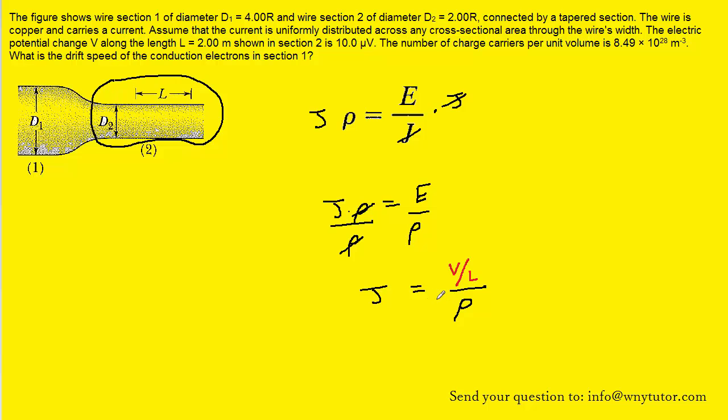This is going to allow us now to calculate the current density that is present in section 2. So we can go ahead and call this J sub 2, which means that these would have to have subscripts of 2's as well for the length of section 2 and then the potential difference in section 2.